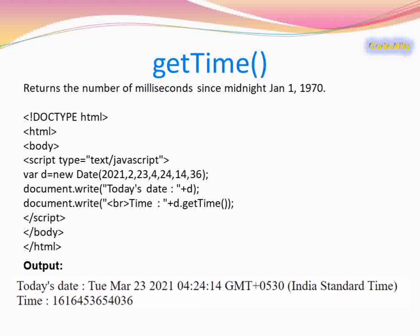The next method is getTime(). getTime() returns the number of milliseconds since midnight January 1st, 1970. It calculates and displays that number of milliseconds on the screen for the given date.